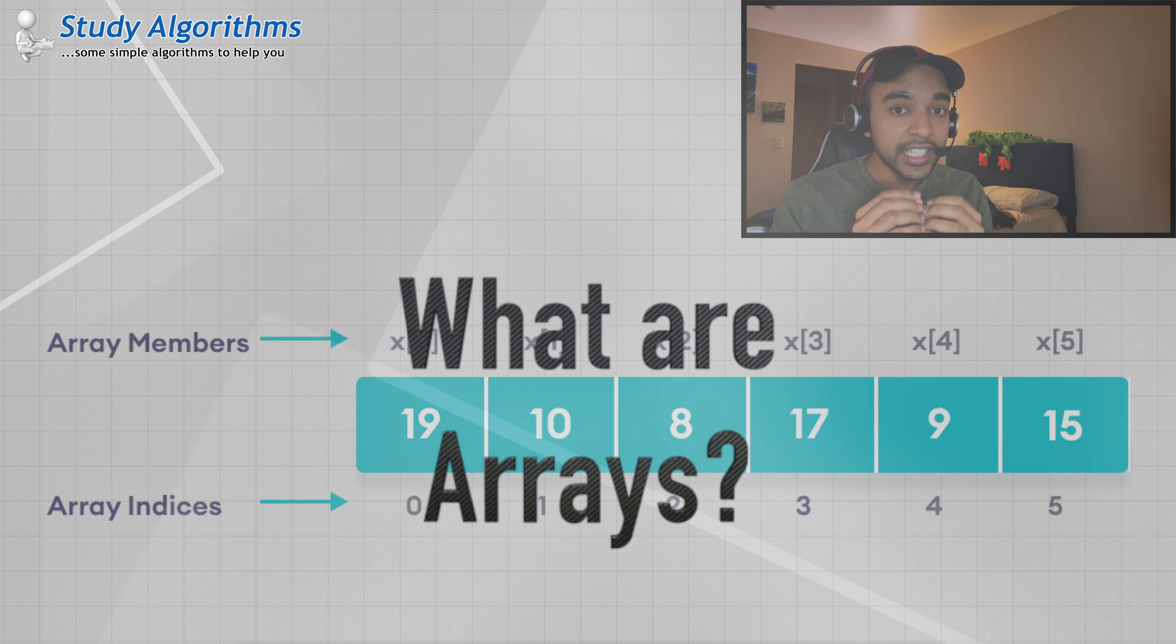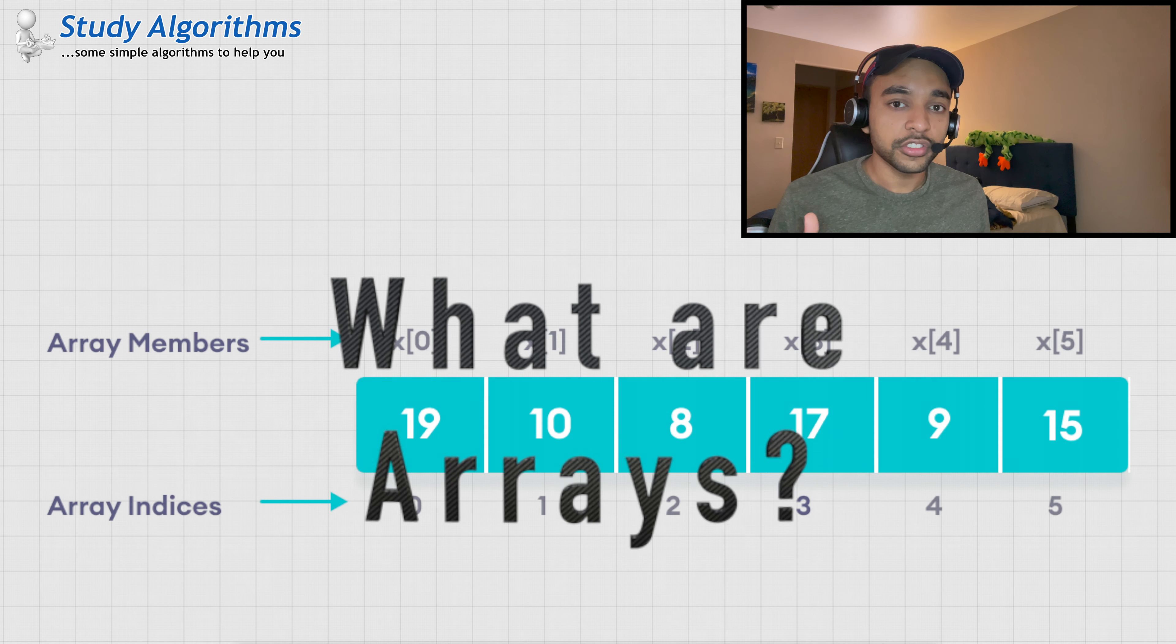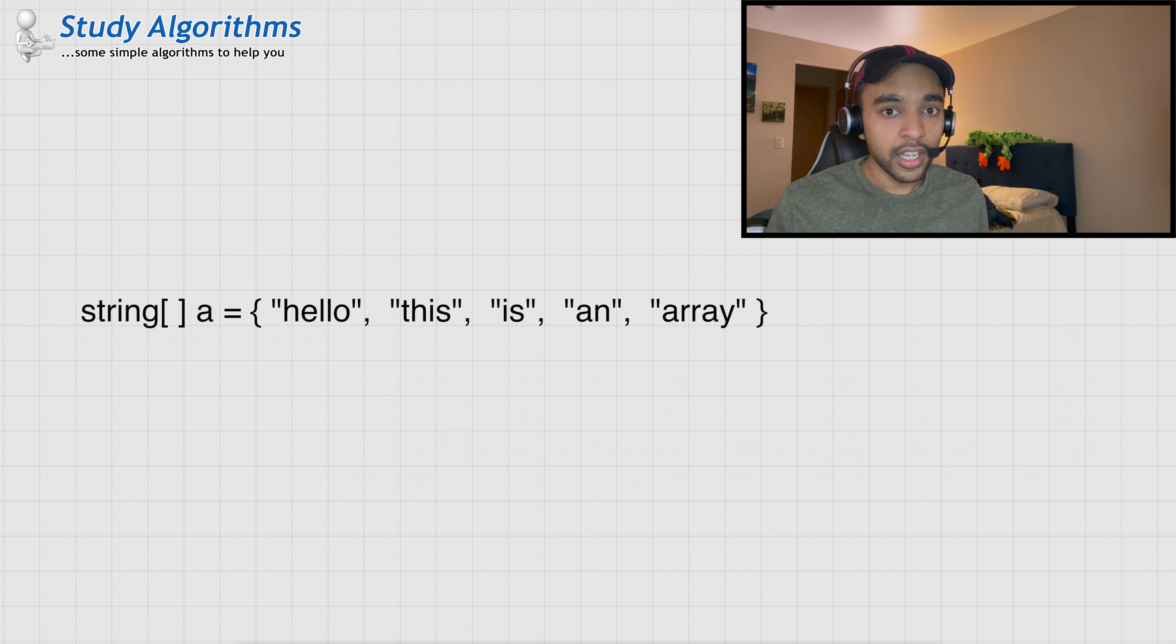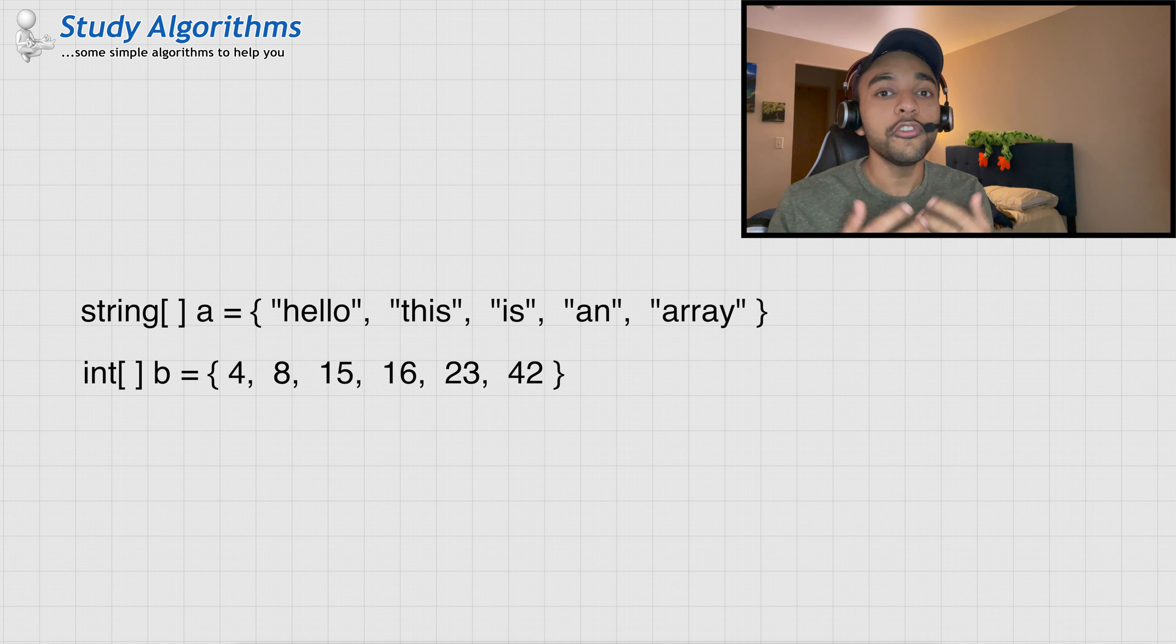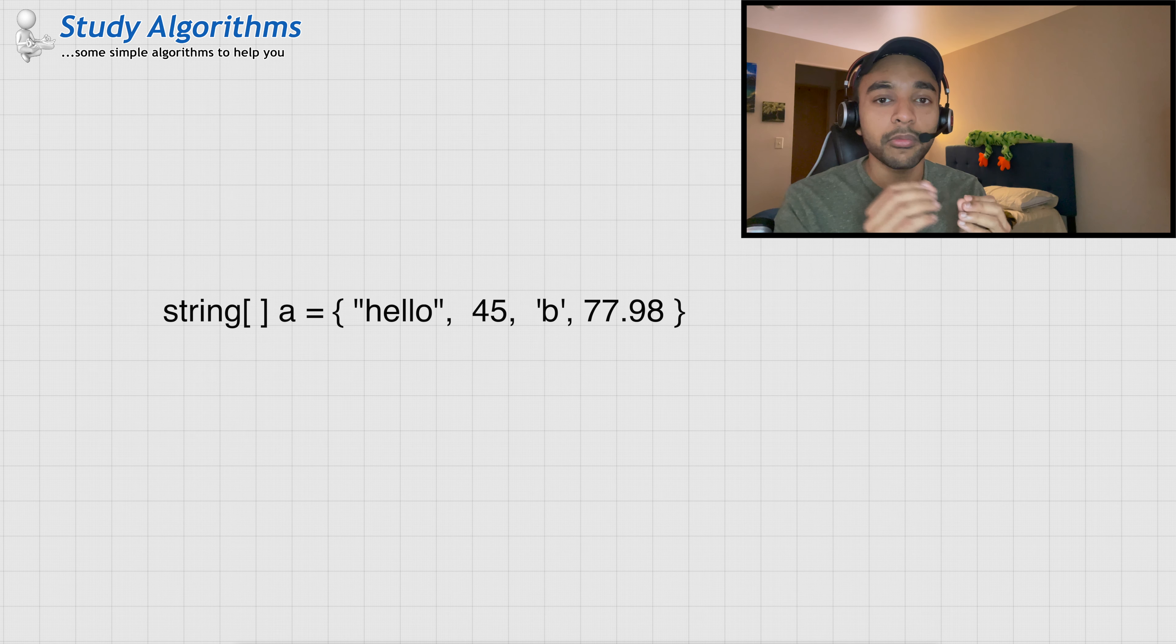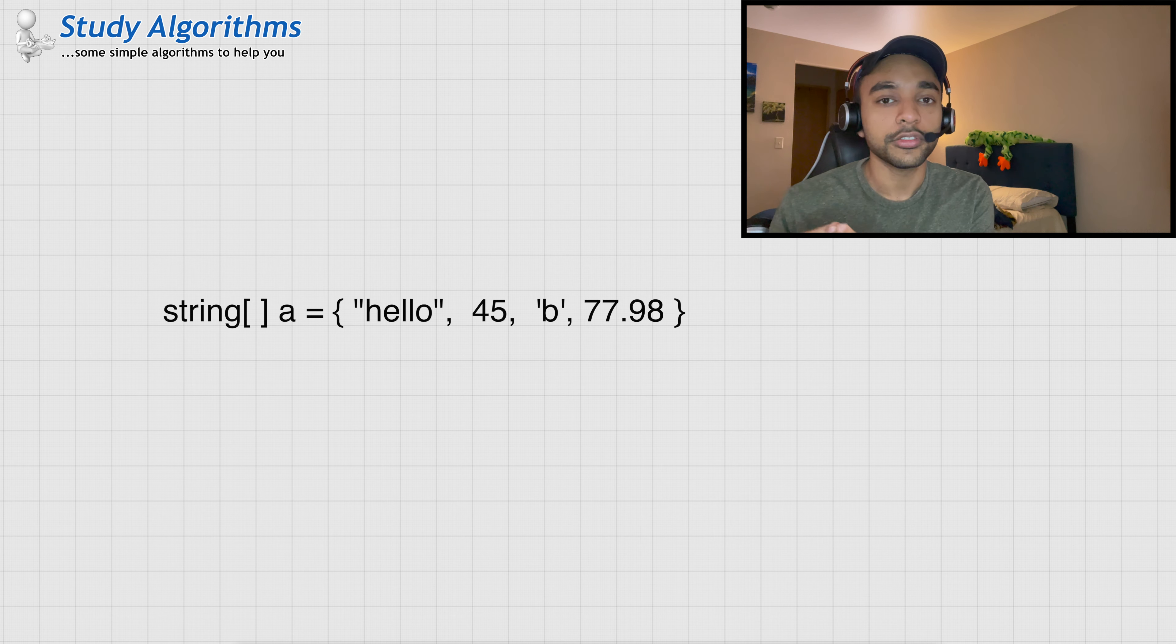An array is a linear data structure where you can store similar type of data in a single variable. The only catch is that all the values should be of the same type. And this is how you define an array. So, if you are creating a string array, all the values should be a string. If you are creating an integer array, all the values should be an integer. If you are creating a character array, all the values should be a character. You cannot have a mixed array that has some values as integers and some values as strings.